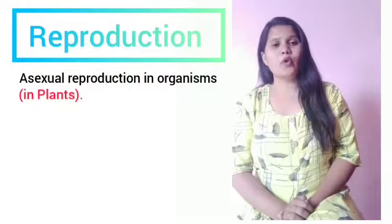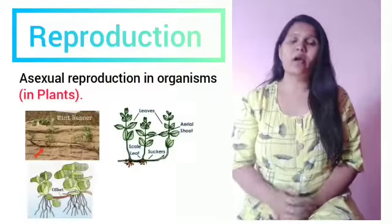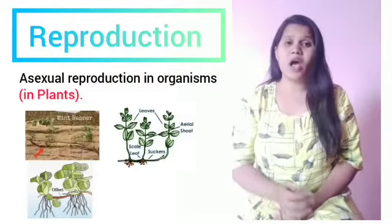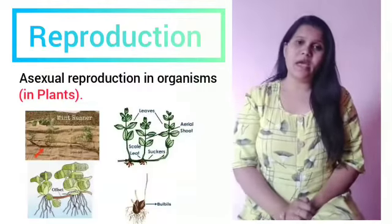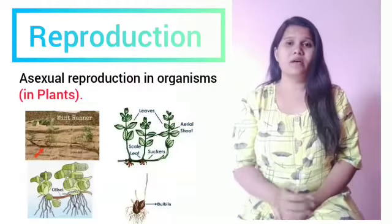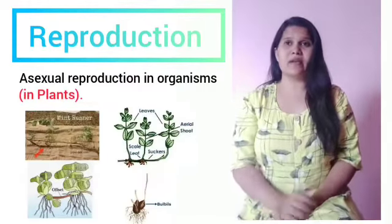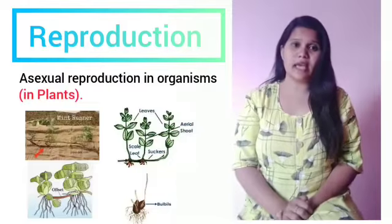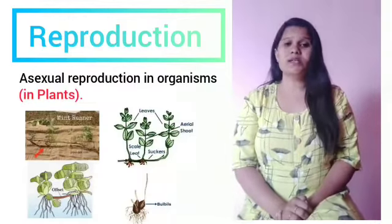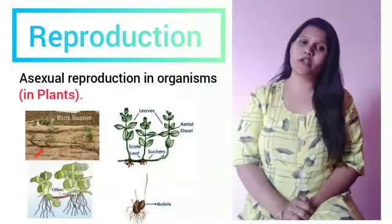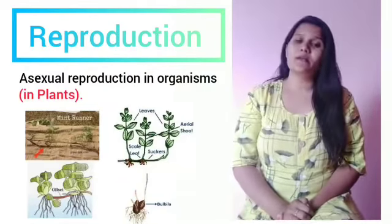Not only in these cases, but vegetative propagules such as runners, suckers, offsets, and bulbs — for example, bulbs in onion and runners in strawberries — also represent how asexual reproduction takes place in higher plants.